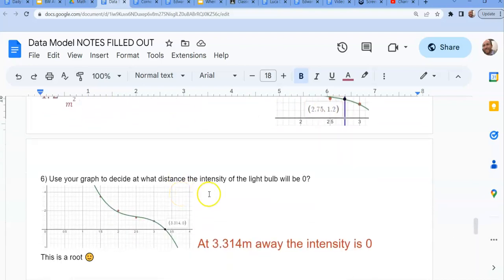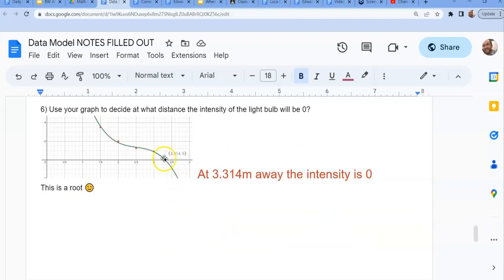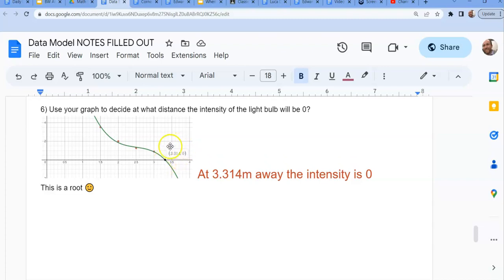The very last one says to use your graph to decide at what distance the intensity is basically zero, is zero, that's asking for a y-intercept. So all I did on my graph was click on the y-intercept. This popped up and showed me it's at 3.314 meters away. If you're that far away from the light bulb, the intensity is basically zero.